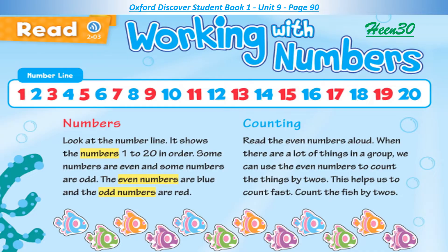Counting. Read the even numbers aloud. When there are a lot of things in a group, we can use the even numbers to count the things by twos. This helps us to count fast. Count the fish by twos.